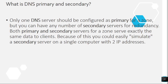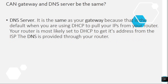Question 21: What is DNS primary and secondary? Only one DNS server should be configured as primary for a zone, but you can have any number of secondary servers for redundancy. Both primary and secondary servers serve the same data to clients. Because of this, you could easily simulate a secondary server on a single computer with two IP addresses.